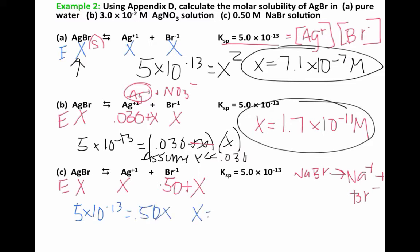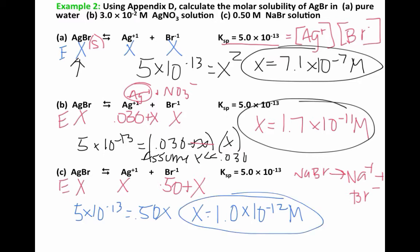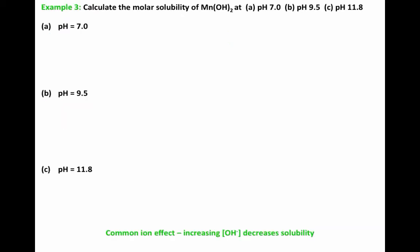Solving for X, we find it's 1.0 times 10 to the negative 12th molar. Silver bromide equals X — that's our answer. Notice the decreased solubility of silver bromide across these problems: we cannot put as many moles per liter of solution when common ions are present. This demonstrates the common ion effect — adding common ions decreases solubility.